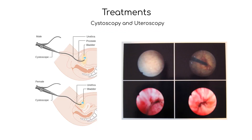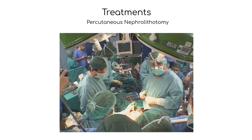Cystoscopy and ureteroscopy: a small scope is passed through the urethra and ureters to the location of the stone, which can be removed or broken apart. Percutaneous nephrolithotomy: a small incision is made in the back so that a device called a nephroscope can be inserted into the kidney, and a laser is then used to break apart the stone.